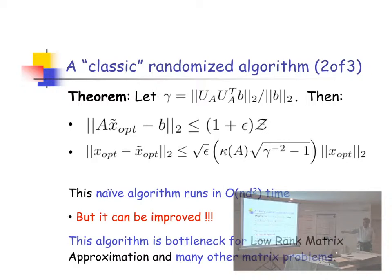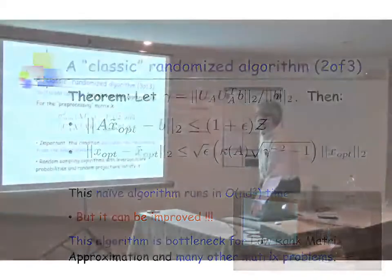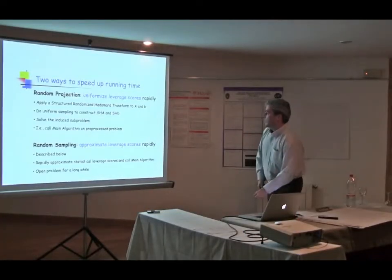And this is a key bottleneck in not only least squares regressions but a whole suite of low-rank approximations. All the random projection algorithms you've heard about. So how do you make it fast?